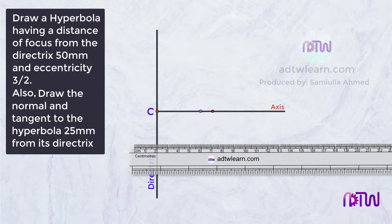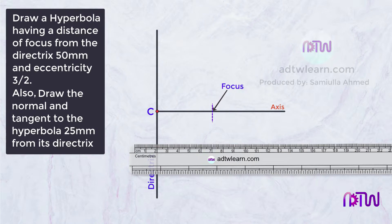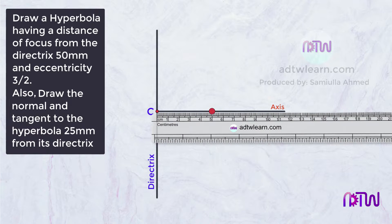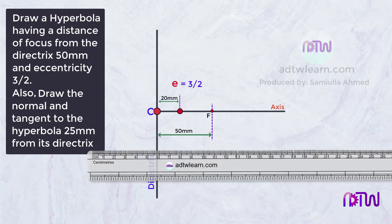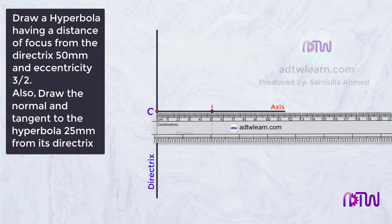Next, mark a point on the axis at 50mm away from the directrix and name this point F — it will be the focus of the hyperbola. After this, we need to mark point V on the axis. This point will be 20mm away from C and 30mm away from F. So take the ruler and mark a point 20mm away from point C.